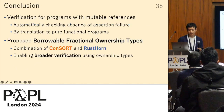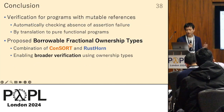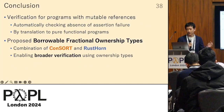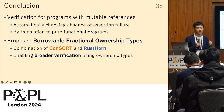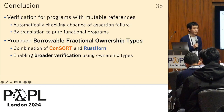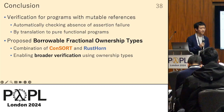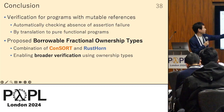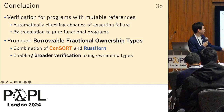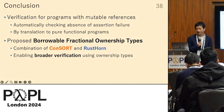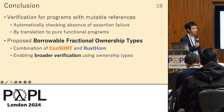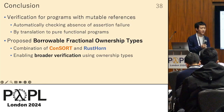In conclusion, the goal of our research is to automatically check the absence of assertion failure for programs with mutable references. We propose borrowable fractional ownership types and a verification method based on RustHorn. This work makes ownership types more widely applicable in the context of automated verification.